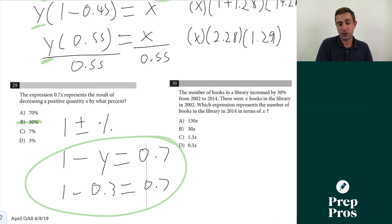Very similar thing here with question 30. It's literally just the opposite of what they put on this other test. The number of books in a library increased by 30% from 2002 to 2014. There were x books in 2002. Which expression represents the number of books in 2014 in terms of x? Here we're simply doing a 30% increase, so we're simply doing one plus 0.3. That's simply going to give us x times 1.3, which is going to give us 1.3x. 30% increase, we're going to see 1.3. 30% decrease, we're going to see 0.7.